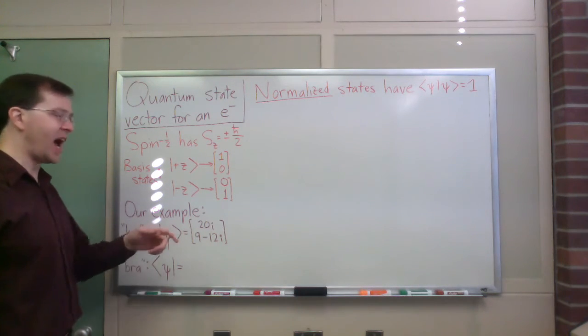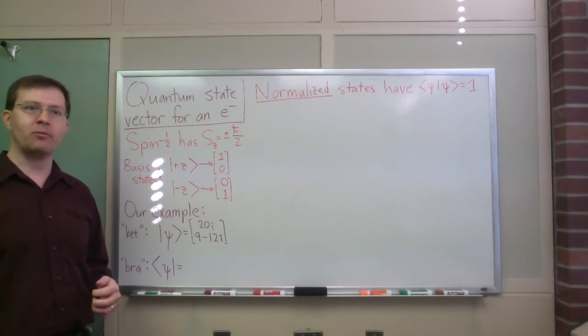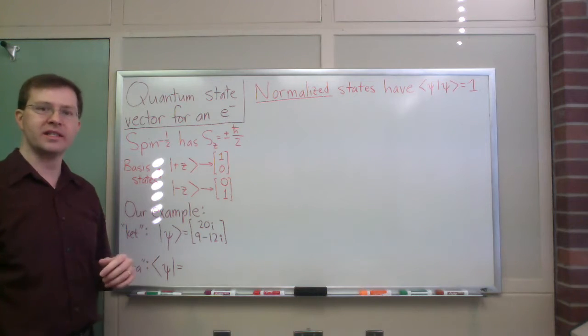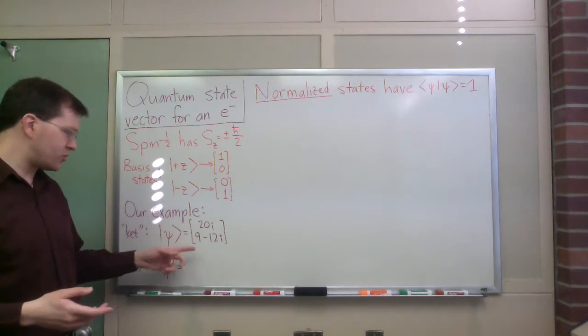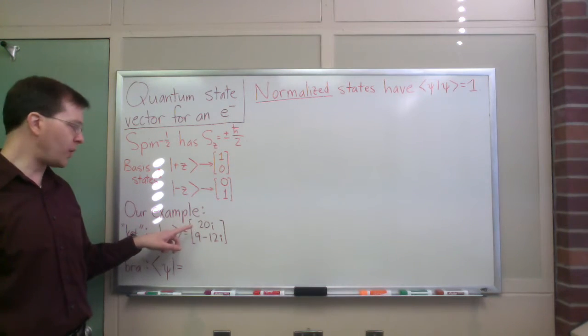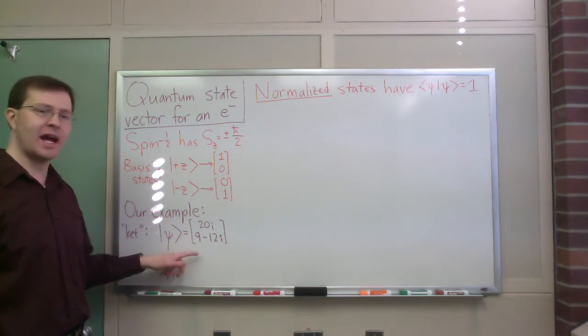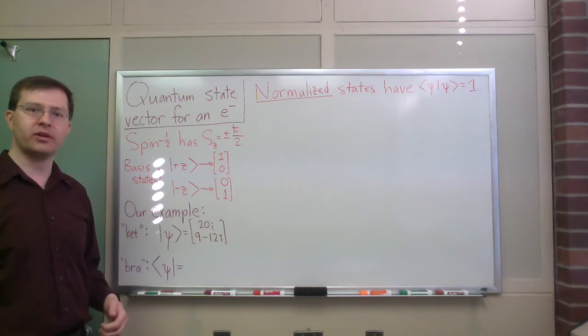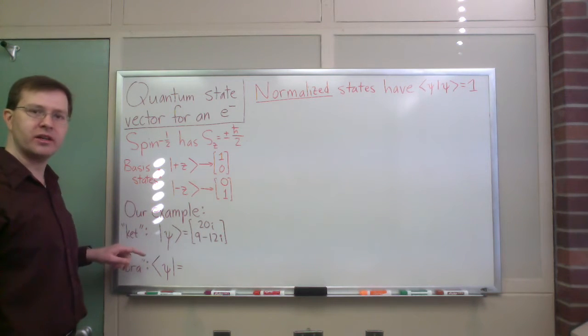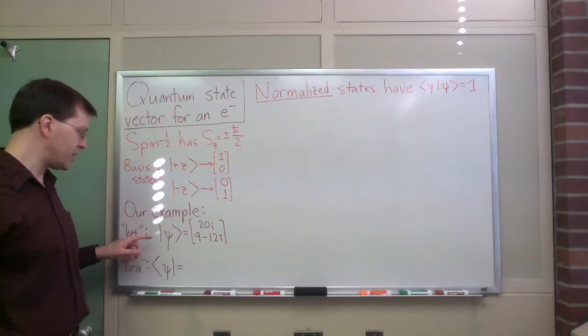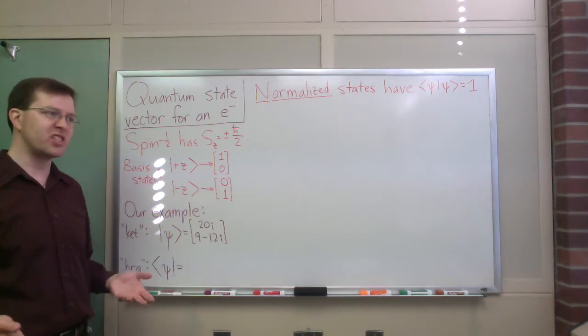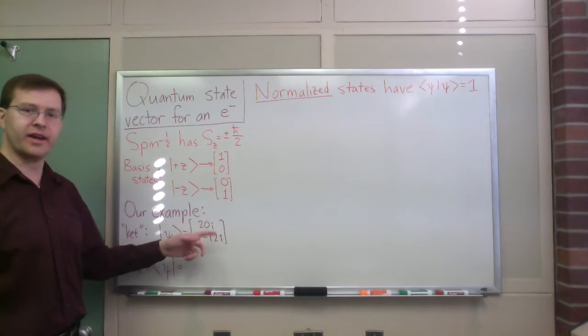This is my state psi. I've got an electron in state psi, or maybe I've got a box that spits out as many electrons as I want, all in state psi. And psi is this two-component thing. I've got 20i, i is the square root of minus 1, the imaginary unit. 20i is the first component, and 9 minus 12i as the second component of my quantum state psi. And I'm using Dirac's Bra-Ket notation to represent these state vectors. This straight line with an angle bracket on the right is a ket. It denotes a ket, which is the standard quantum state vector. There it is, it's a column vector.